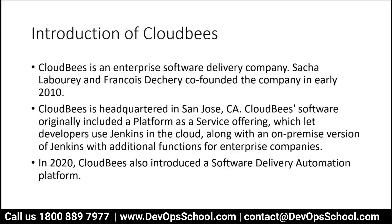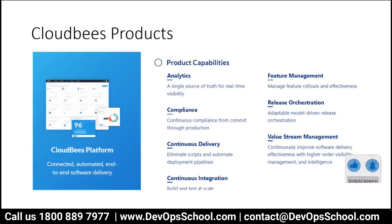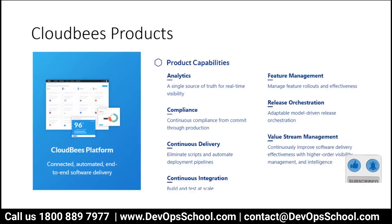In 2020, CloudBees introduced a software delivery automation platform — what we call CDRO and related products. They have capabilities such as an analytics platform, compliance analytics which is a single source of truth for real-time visibility across your product lines deployed in different environments, and compliance — meaning continuous compliance from commit through production.